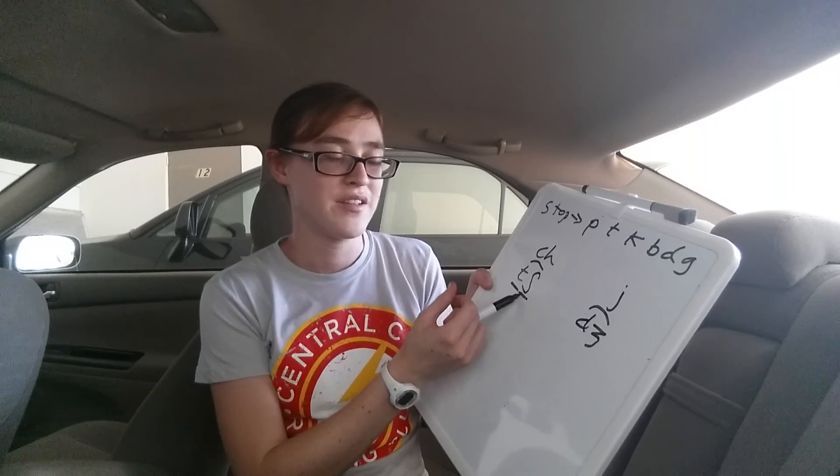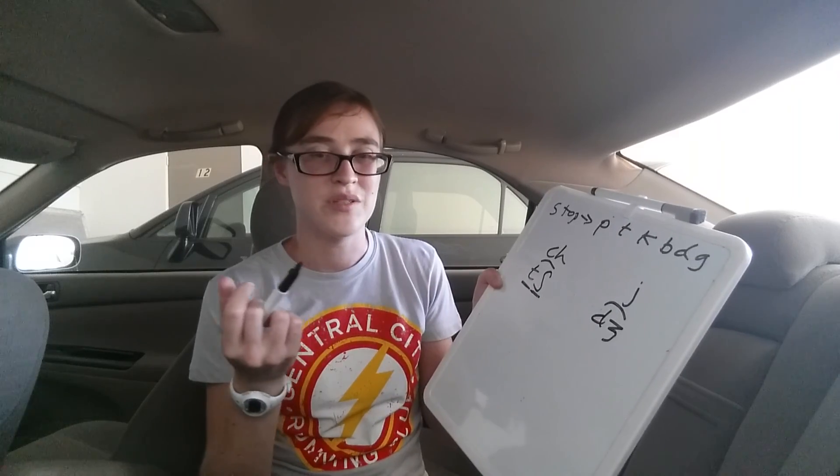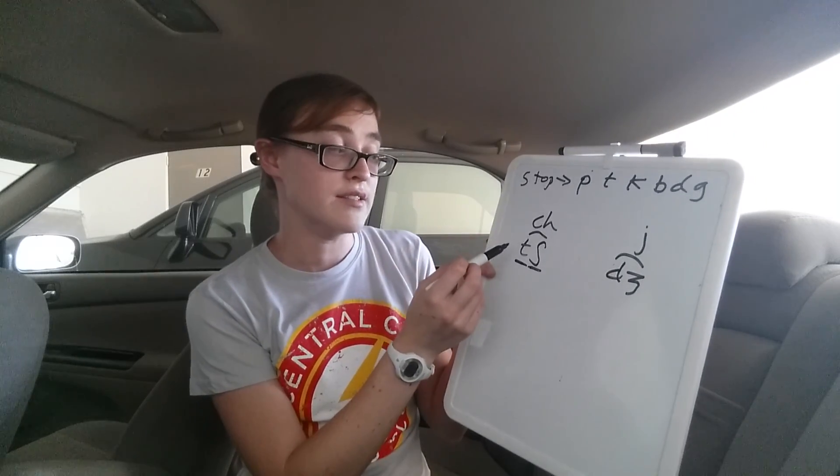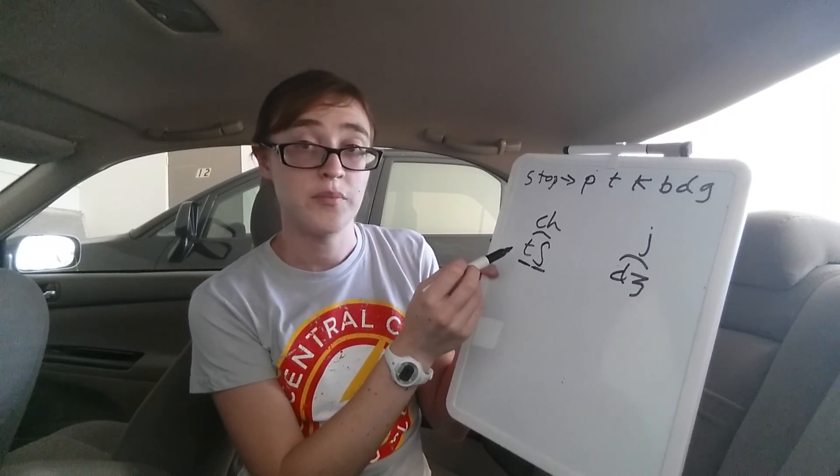So an affricate starts out like a stop and ends like a fricative. And why do we consider these one sound phonetically? Even the symbols are written with two symbols stuck together. Well, people think they are one sound when they're speaking. So little kids, if you teach them to separate sounds in a word, they won't treat CH as T plus SH — they'll treat it as one sound.